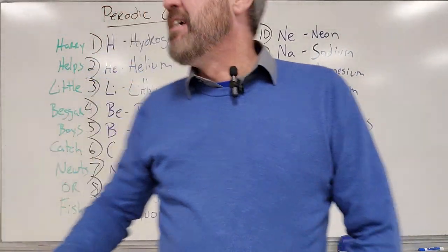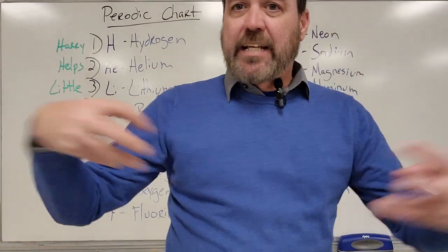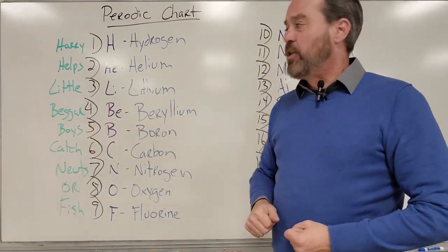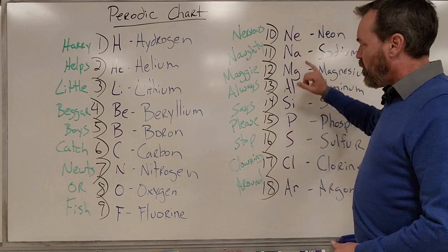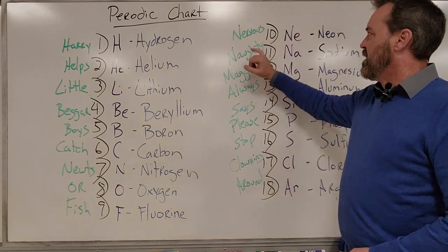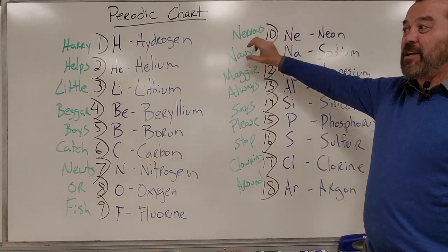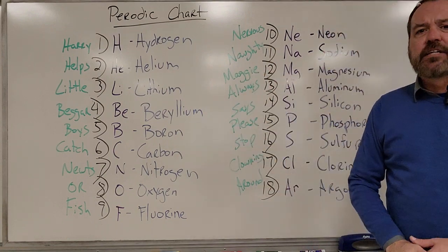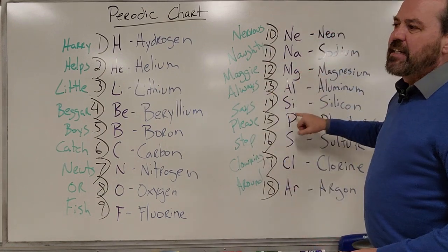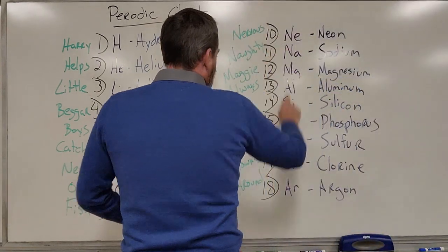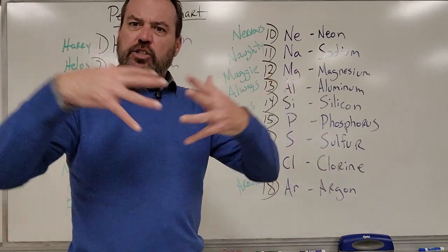This is important because it starts telling us how our subatomic particles — our protons, neutrons, and electrons — are going to come together to form molecules. For our second nine, elements 10 through 18: NE for neon (nervous), NA for sodium (naughty), then Maggie always says please stop clowning around. So: nervous, naughty Maggie always says please stop clowning around.